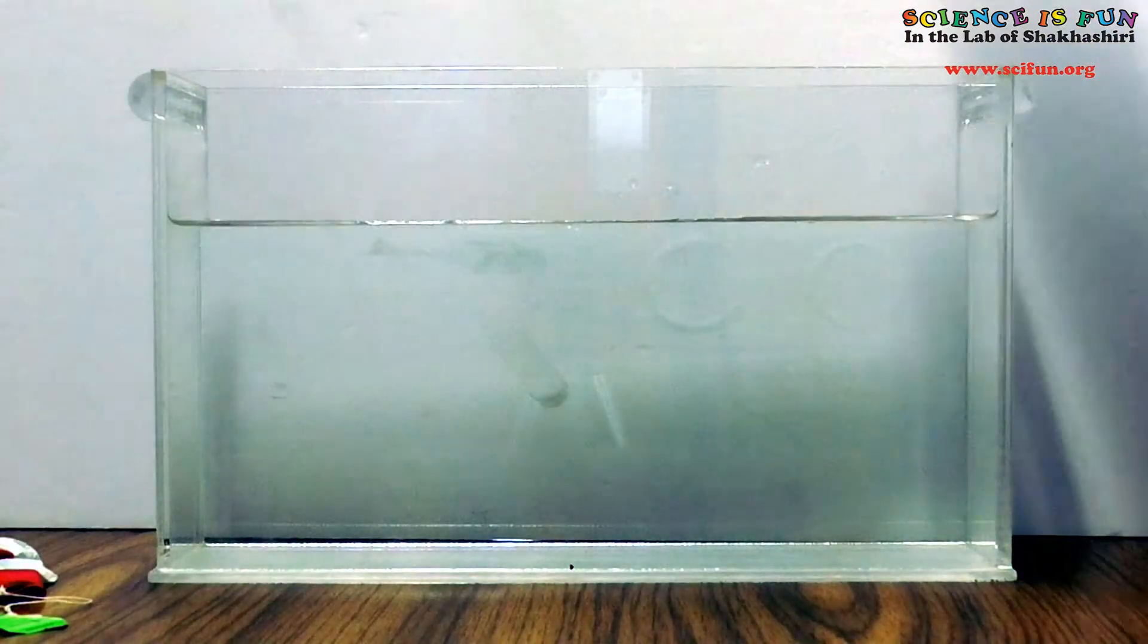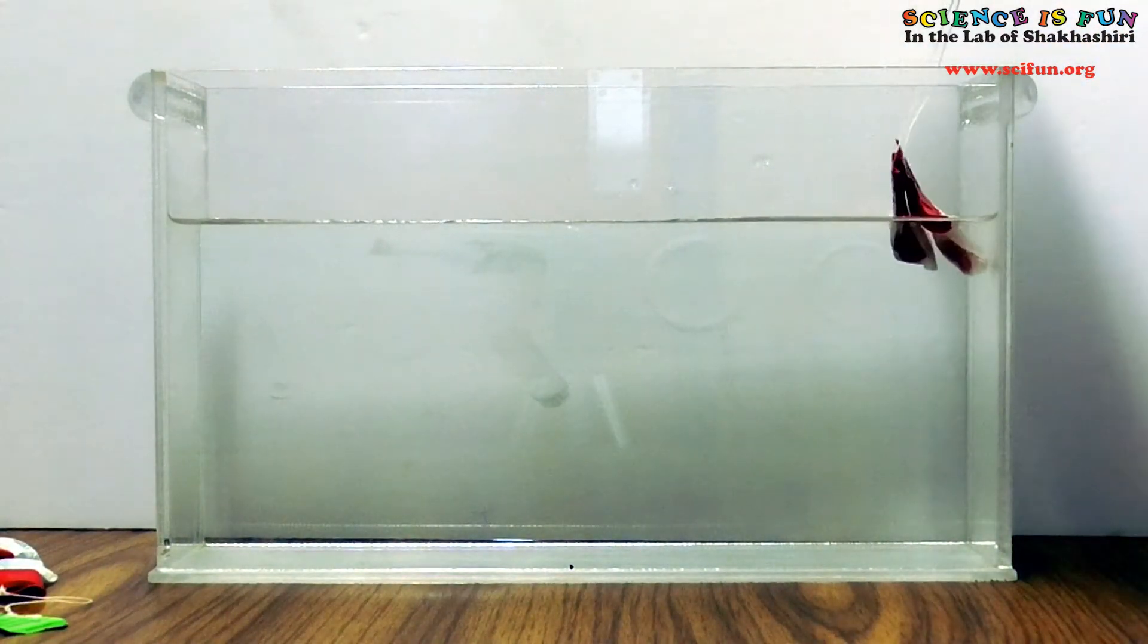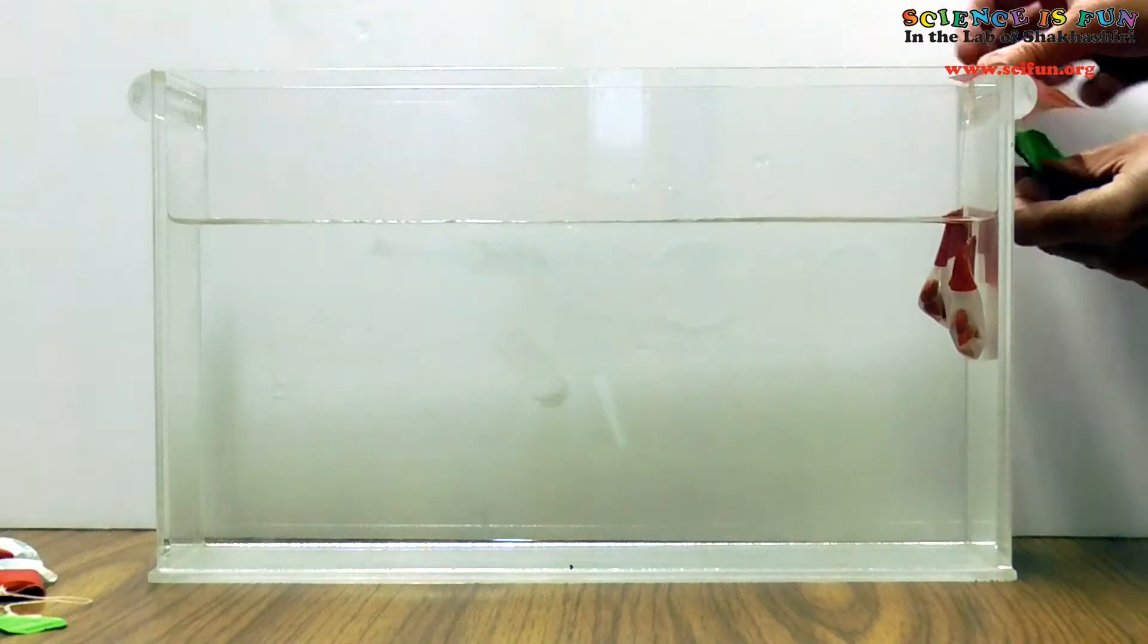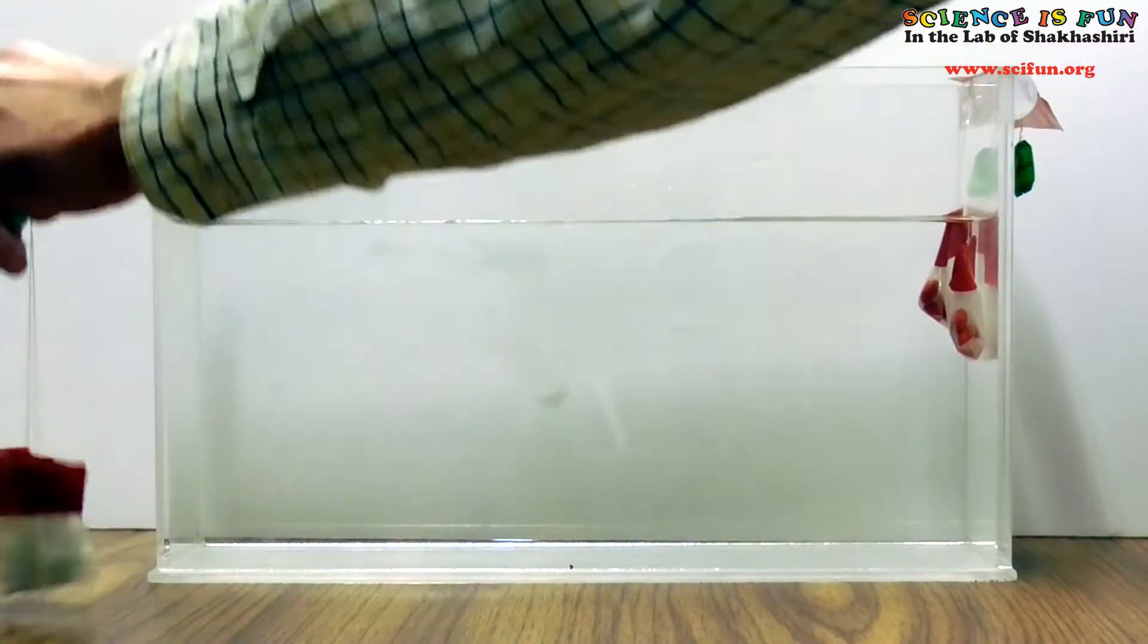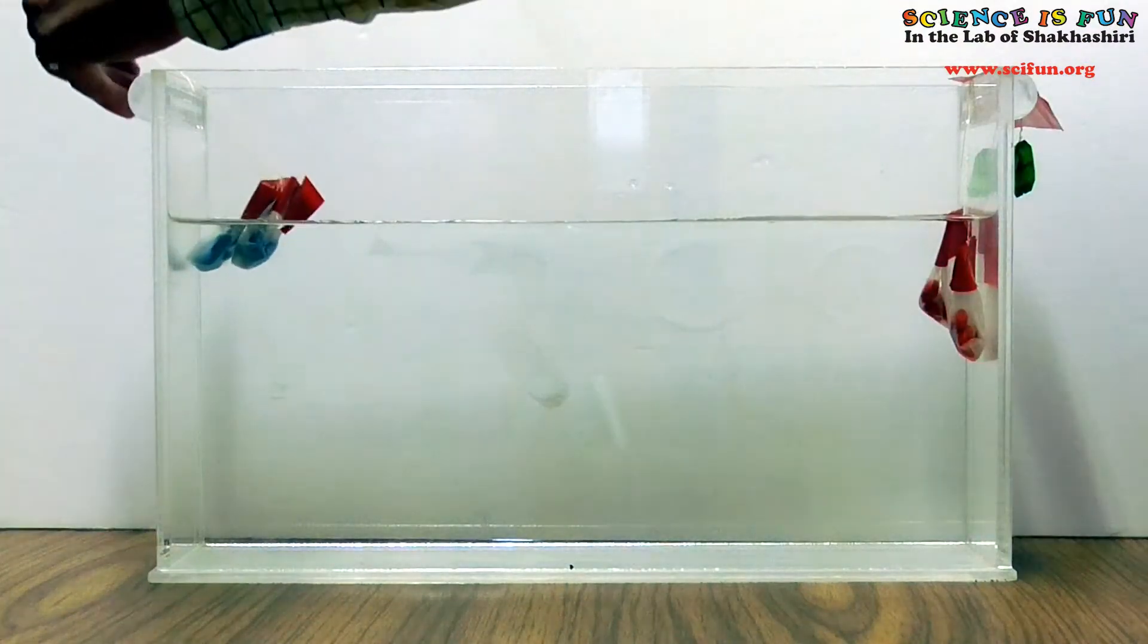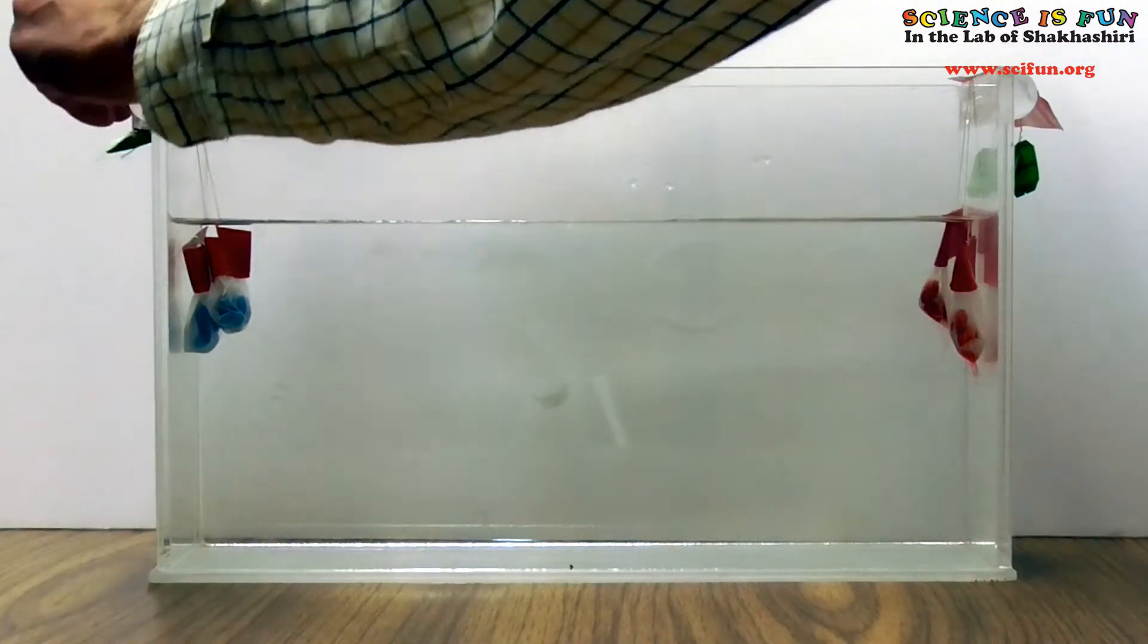Now I'll submerge the tea bags beneath the surface of the water in this aquarium. The tea bags with the red M&Ms will go on the right, and the tea bags with the blue M&Ms will go on the left. Okay, let's watch to see what transpires.